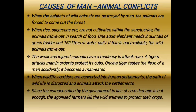Causes of man-animal conflicts — there are totally 5 points. First, when the habitats of wild animals are destroyed by man, the animals are forced to come out of the forest, leading to man-animal conflict. Second, when crops like rice or sugarcane are not cultivated within the sanctuaries, the animals move out in search of food. One adult elephant needs 2 quintals of green food and 150 litres of water daily; if this is not available, wild animals move out of the forest.